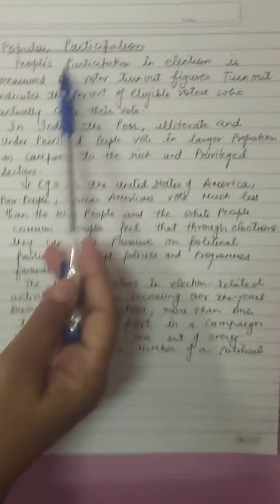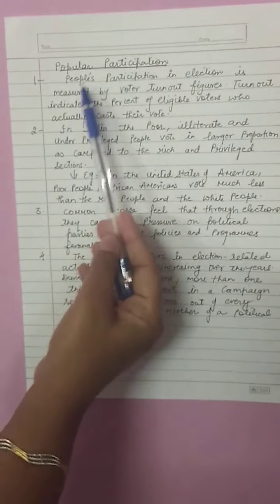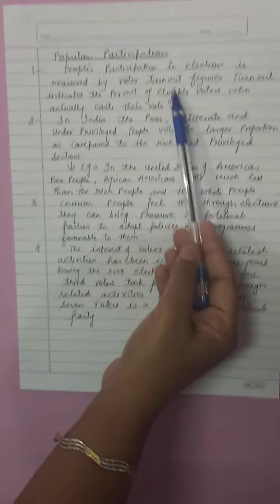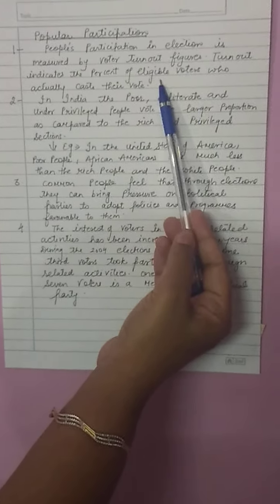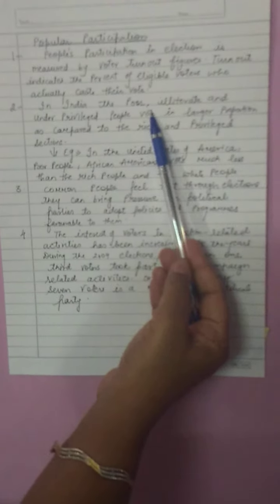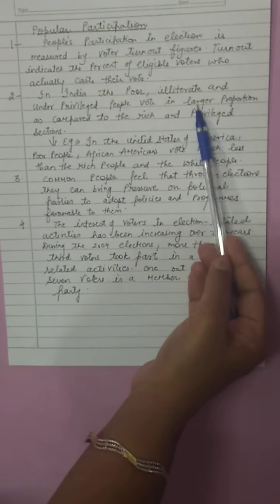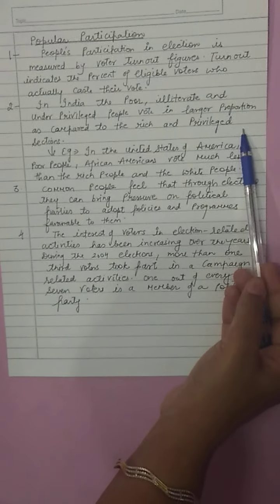The next topic is popular participation. People's participation in elections is measured by voter turnout figures — how many people go out to vote. Turnout indicates the percentage of eligible voters who actually cast their vote. In India, the poor, illiterate, and underprivileged people vote in larger proportion as compared to the rich and privileged sections.